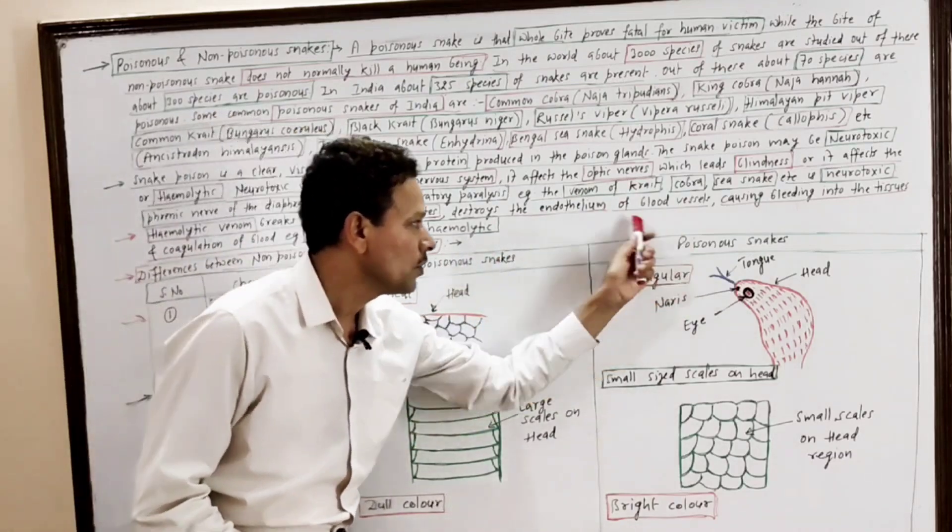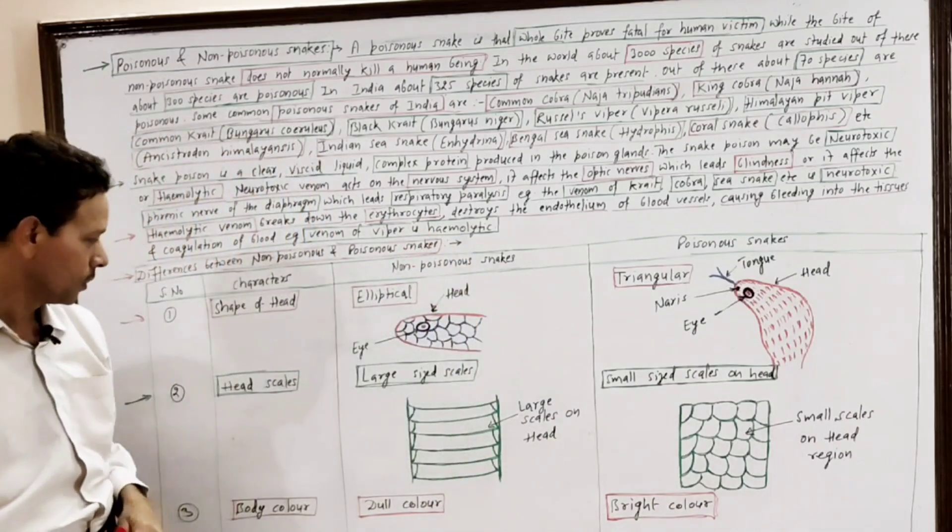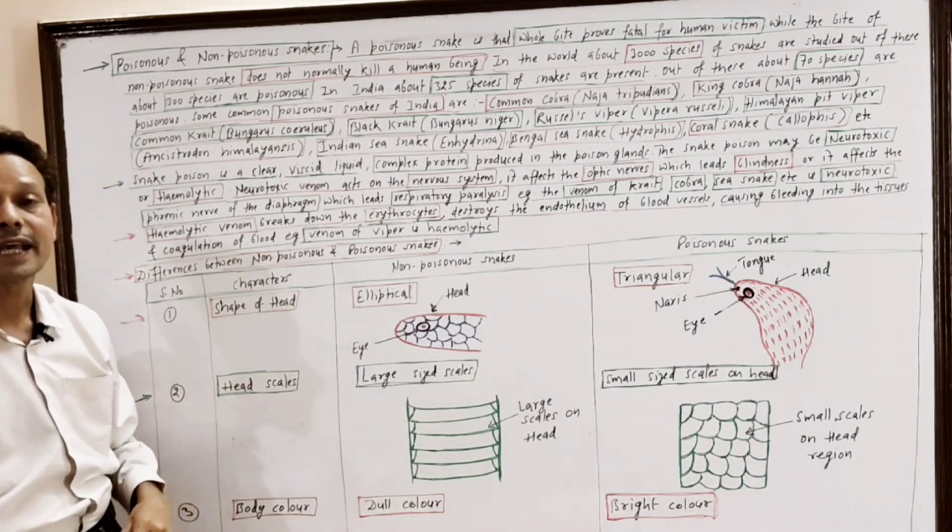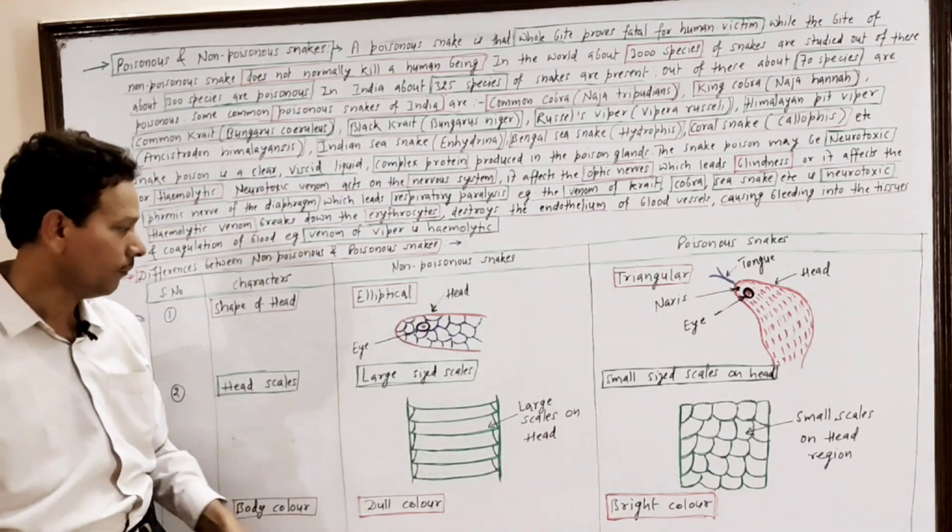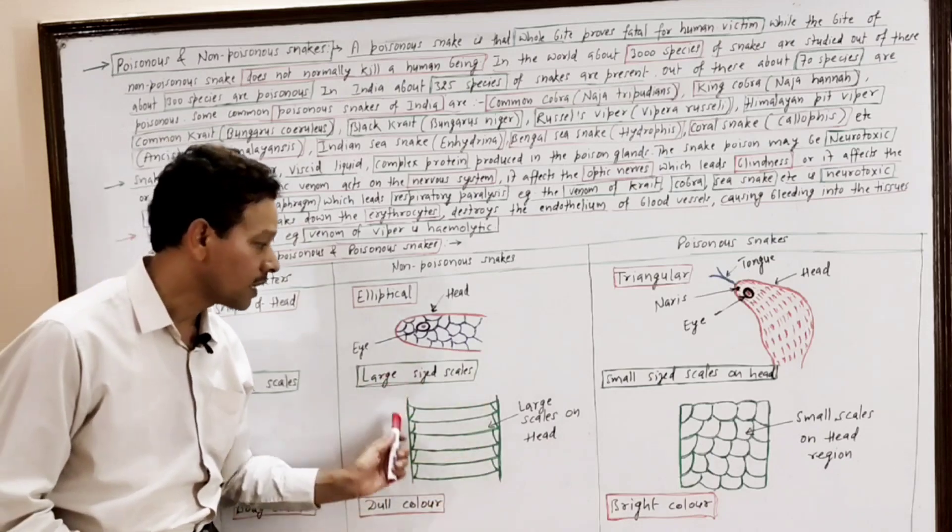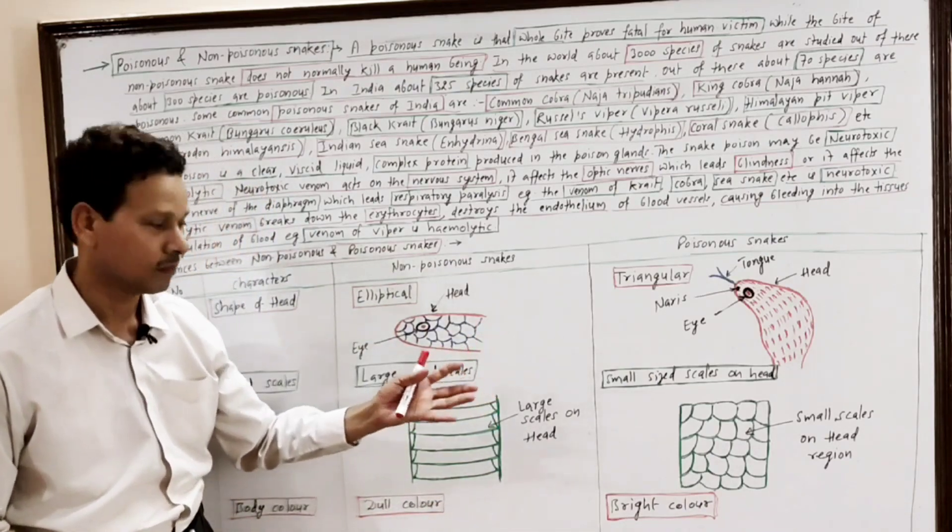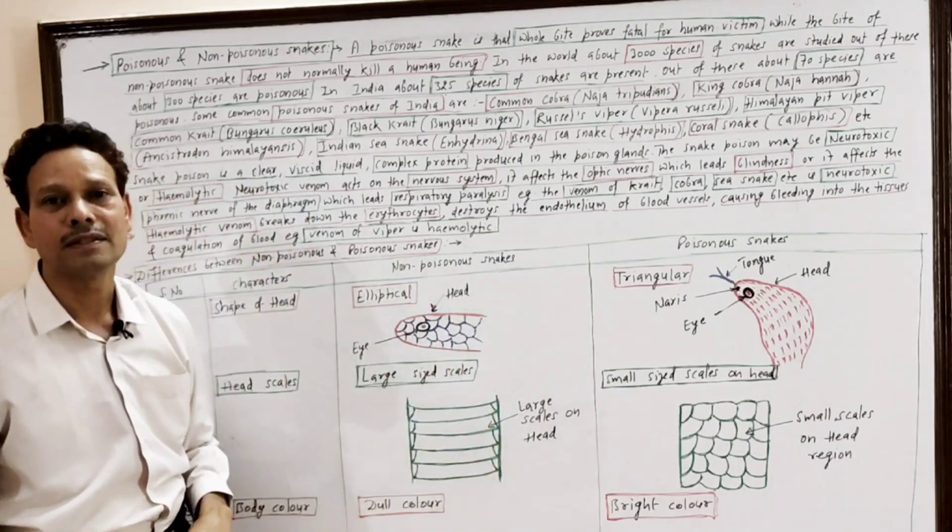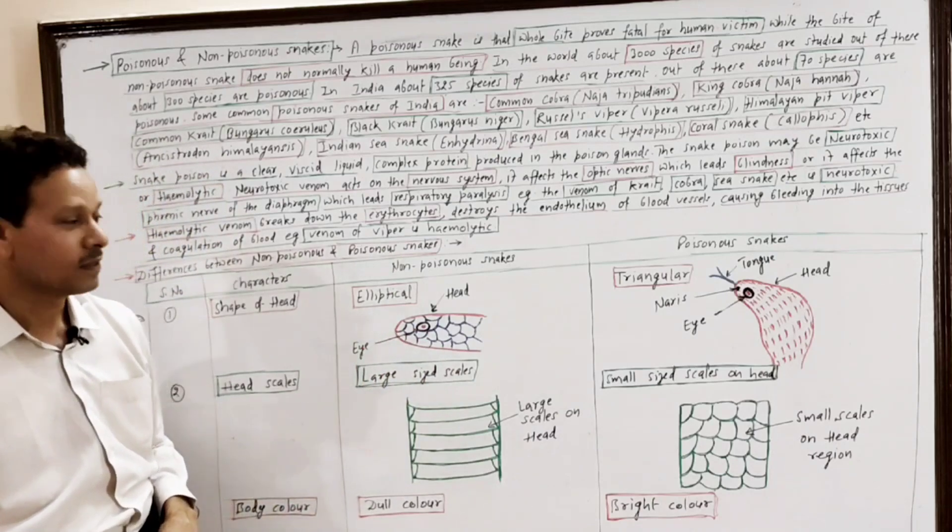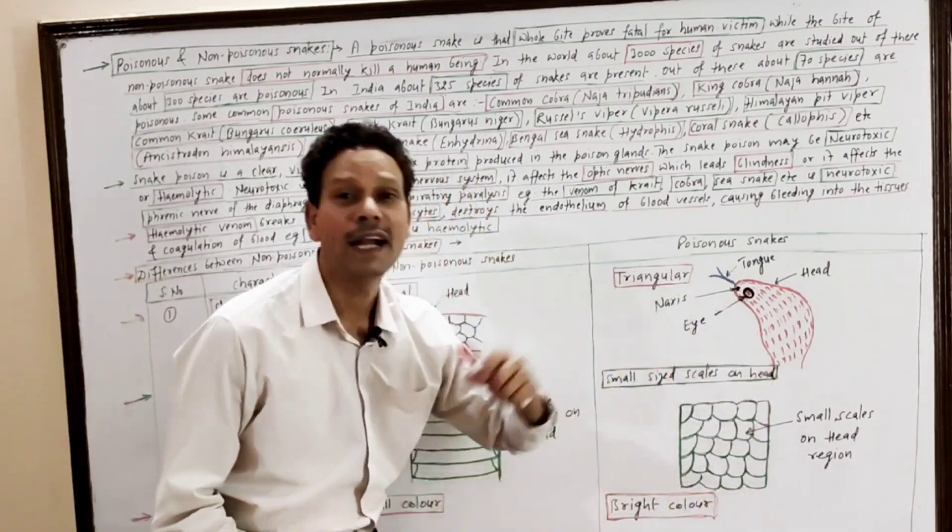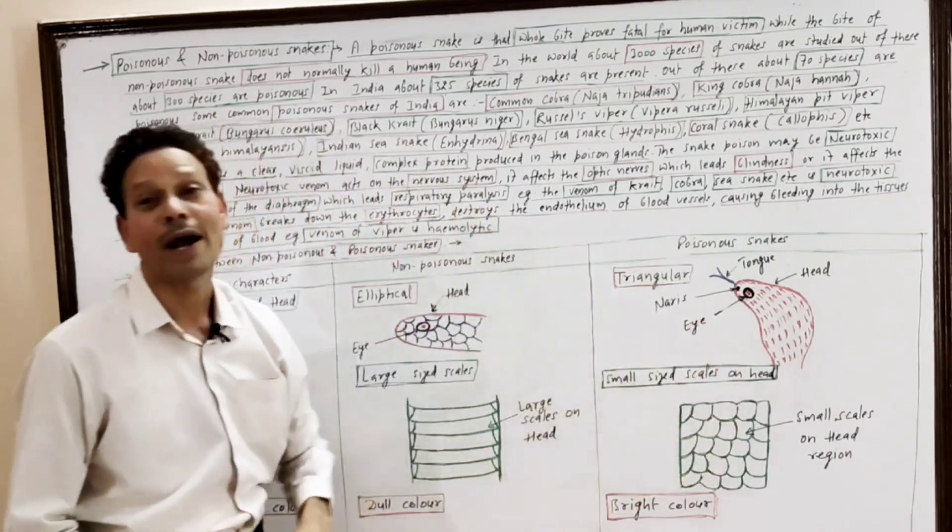Second point is head scales, meaning the size of scales over the head region. If the scales over the head region are larger in size, the snake is non-poisonous. While if the scales over the head region are small-sized, the snake is poisonous.